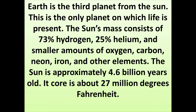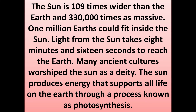The sun's mass consists of 73% hydrogen, 25% helium and smaller amounts of oxygen, carbon, neon, iron and other elements. The sun is approximately 4.6 billion years old. Its core is about 27 million degrees Fahrenheit. The sun is 109 times wider than the earth and 3,30,000 times as massive. One million earths could fit inside the sun.